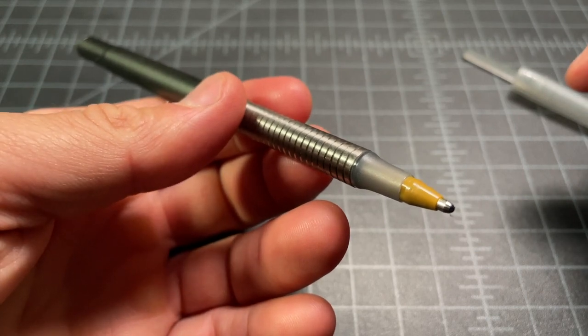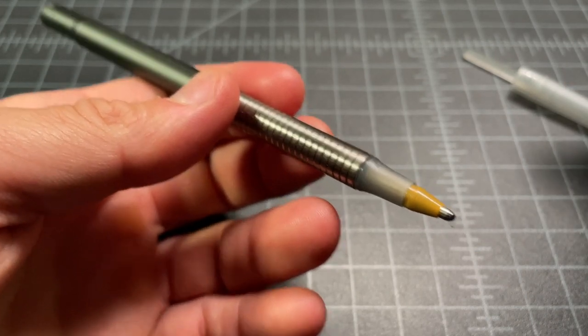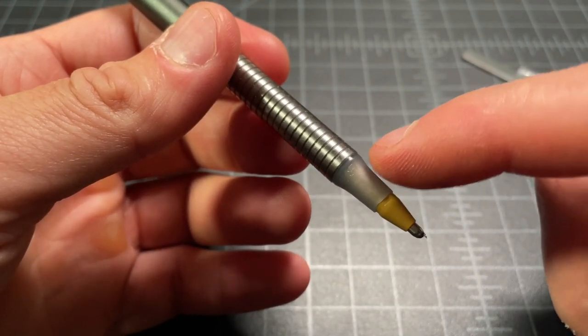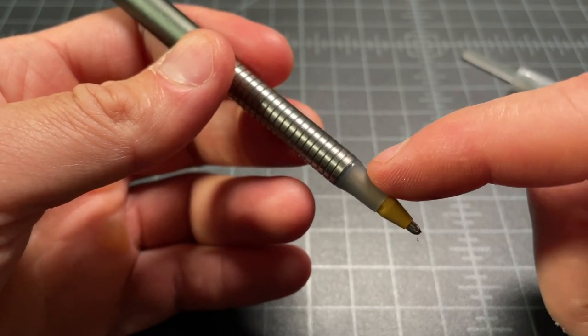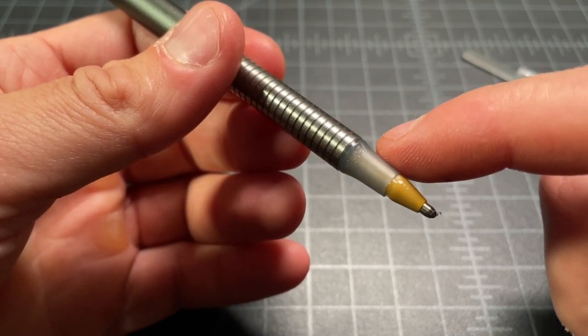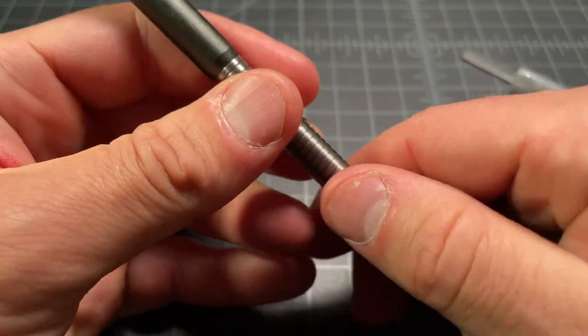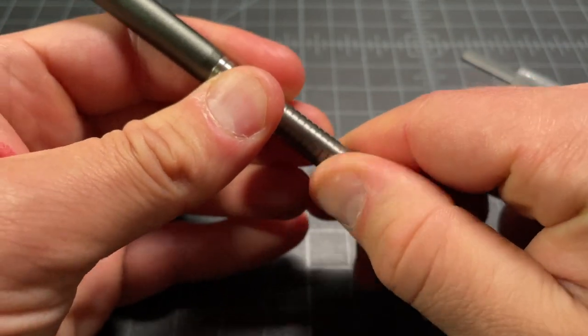This part right here you can choose the color of. This is not something that Baux makes, they just use the actual Bic piece from the Round Stick. This piece is in there really tight, which is nice.